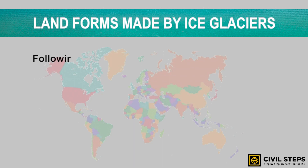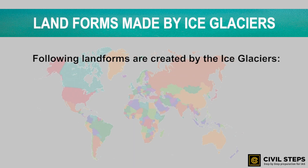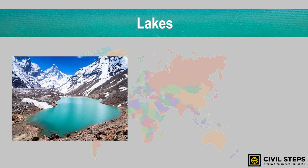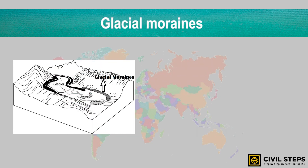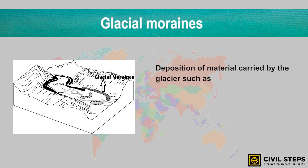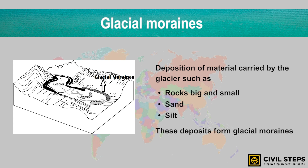Landforms made by ice glaciers include lakes and glacial moraines. Glaciers carve out deep hollows on mountains, and as the ice melts, they get filled with water, forming the beautiful mountain lakes. The material carried by the glacier — rocks big and small, sand, and silt — gets deposited to form glacial moraines.